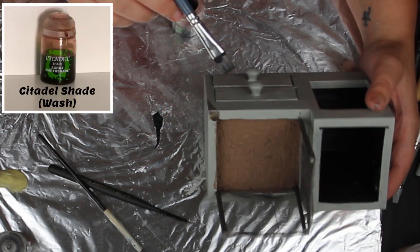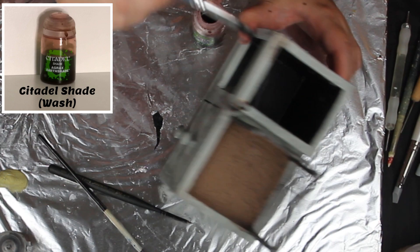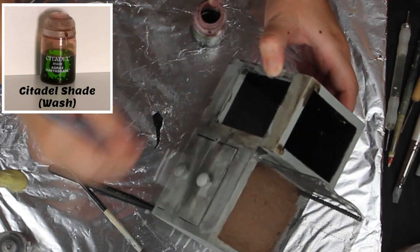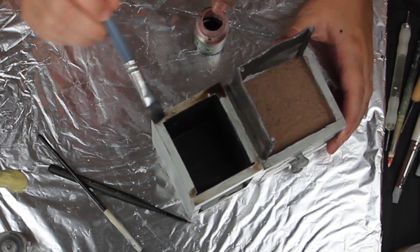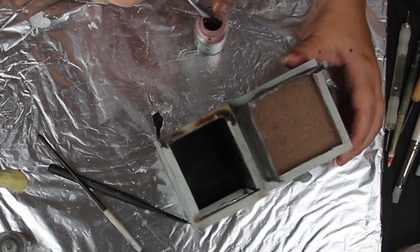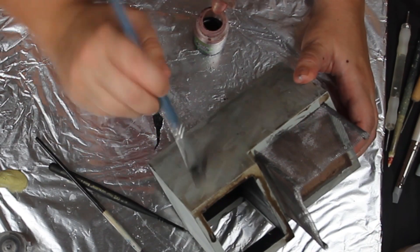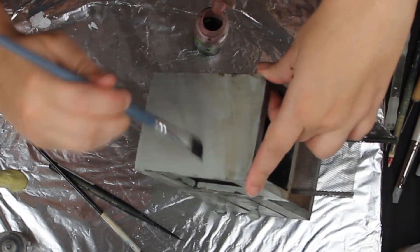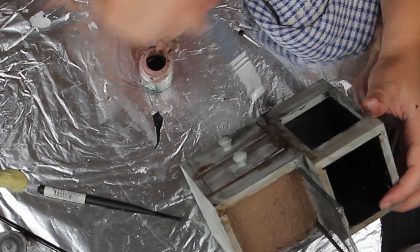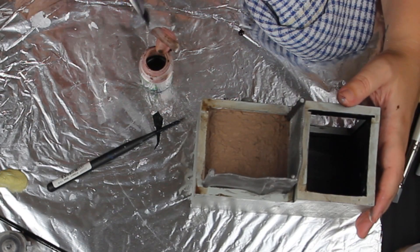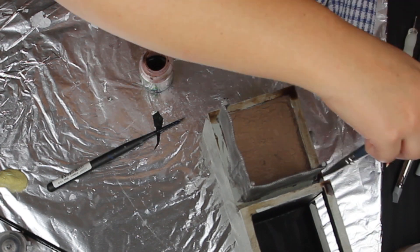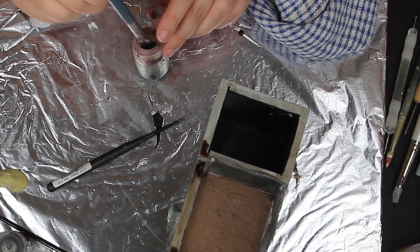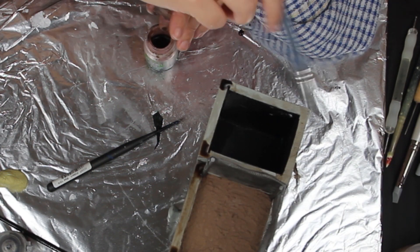So now I'm using a wash, a brown wash from Citadel and I'm sort of dripping it down the edges and covering the box in it to give the sort of grey cement look a gritty worn down look. I'm coming with a second layer here and I'm just dribbling it again just to give it an extra darkness to some areas.